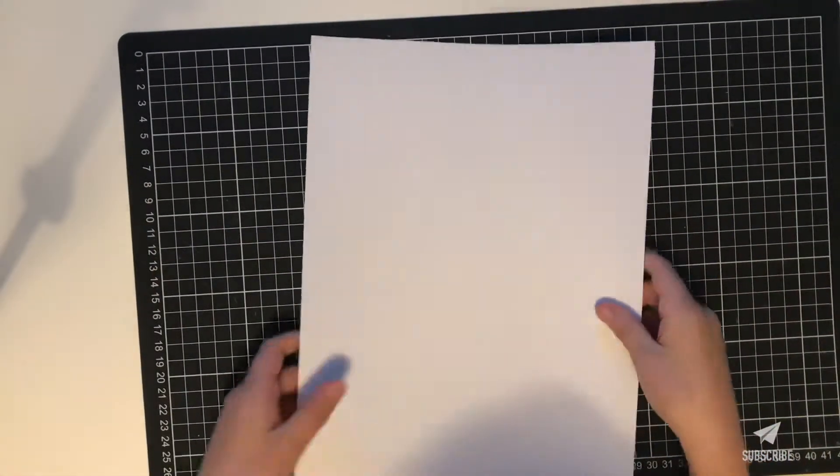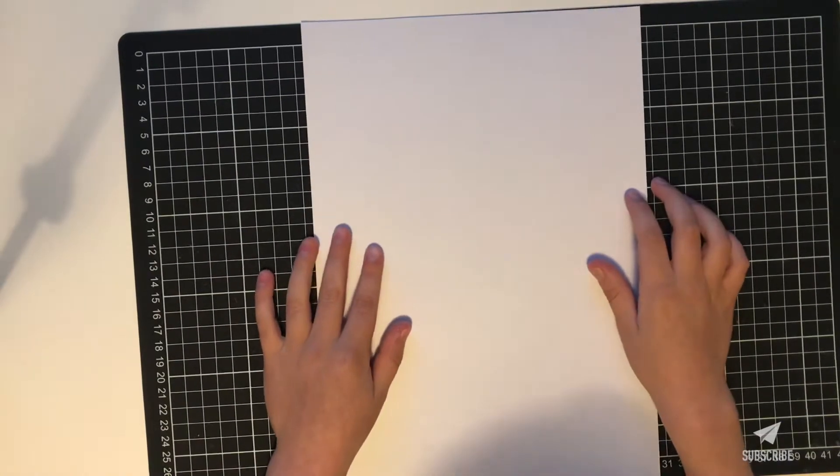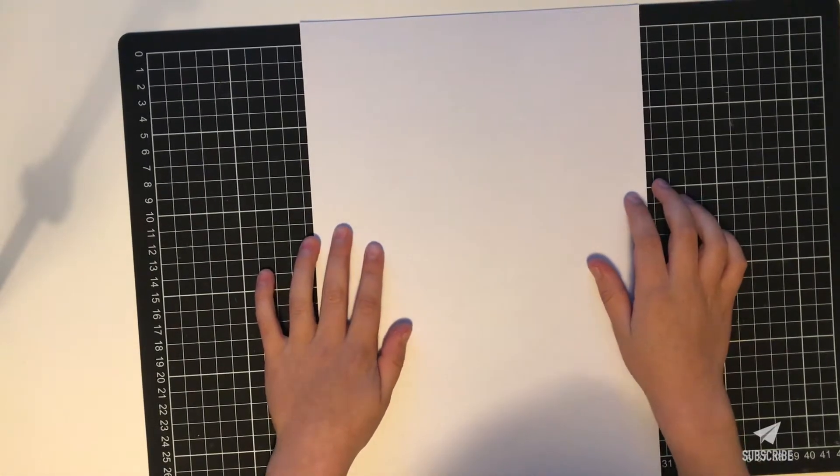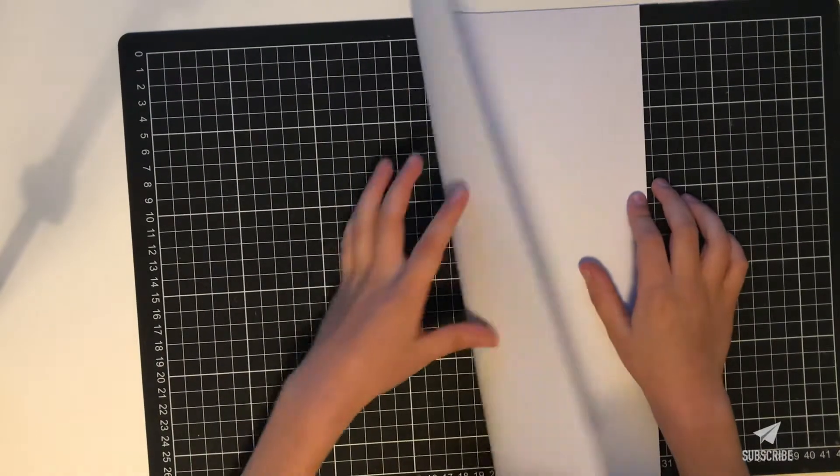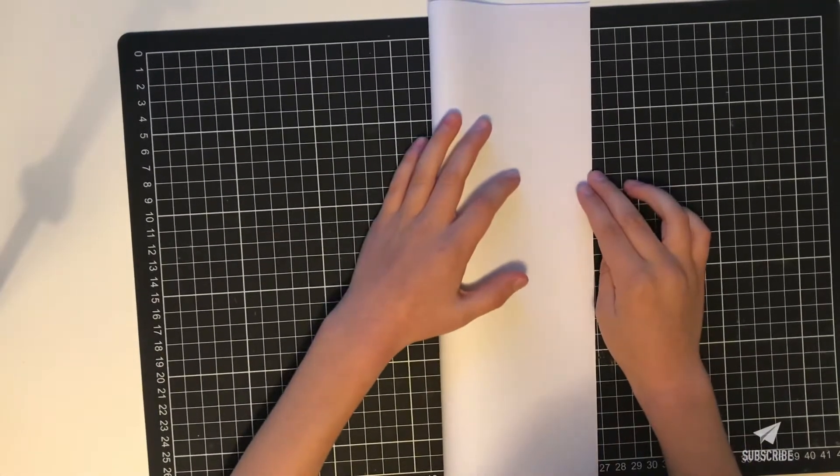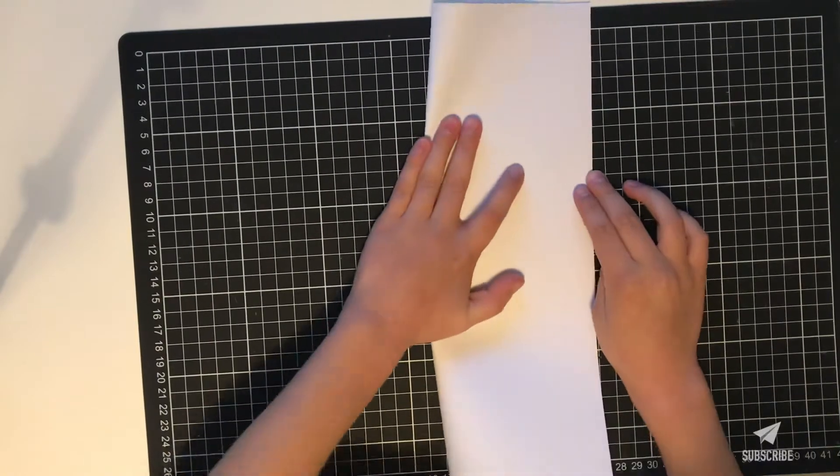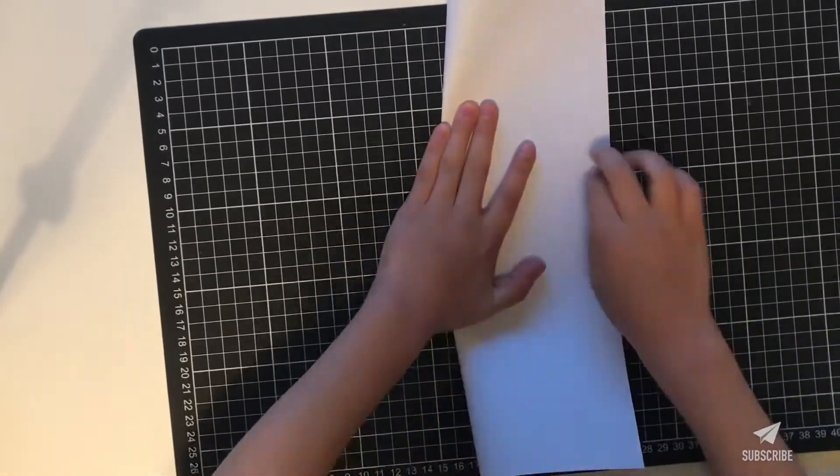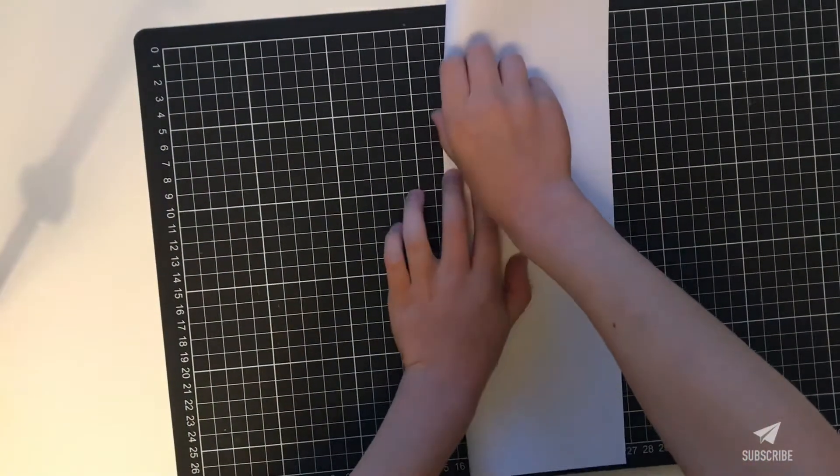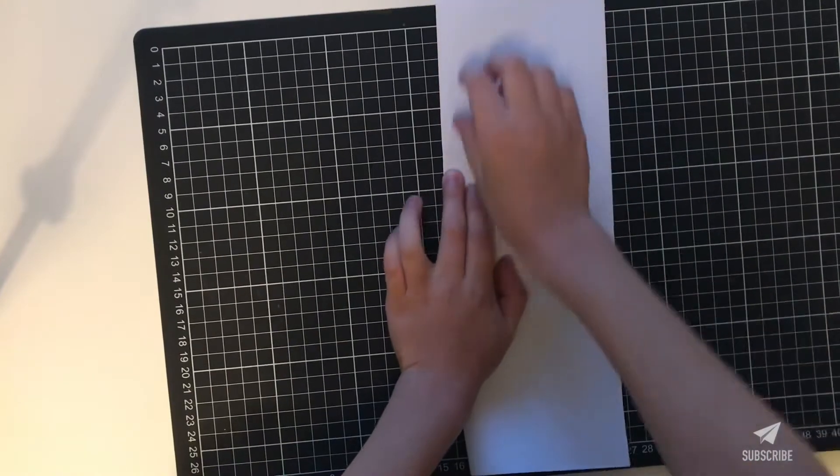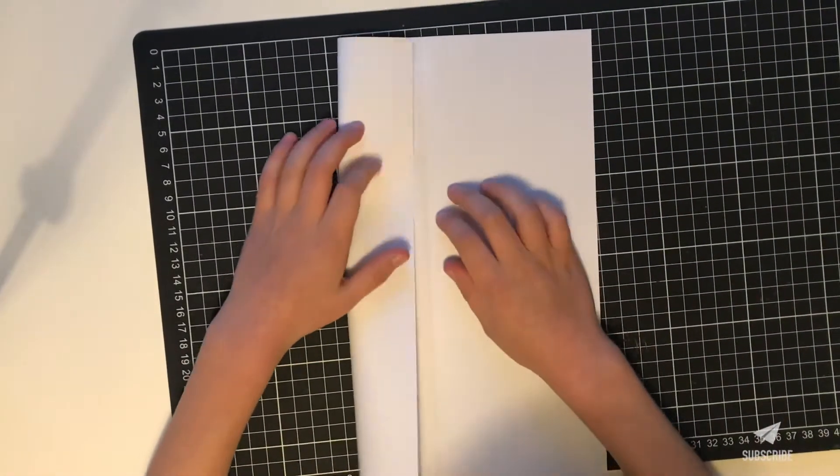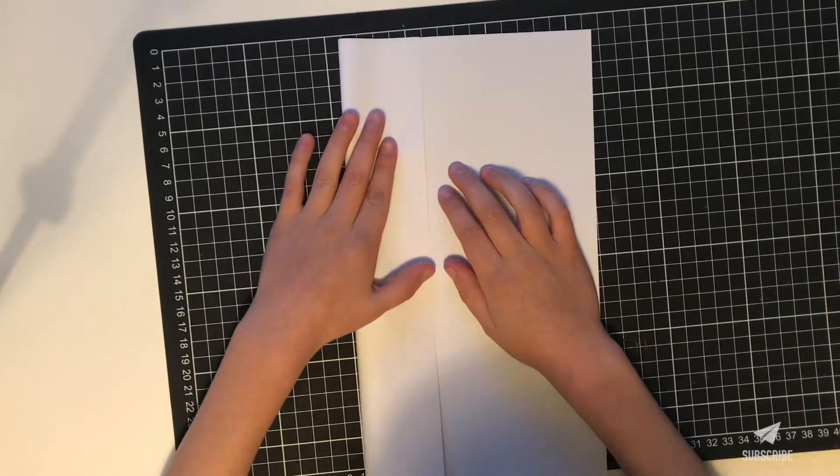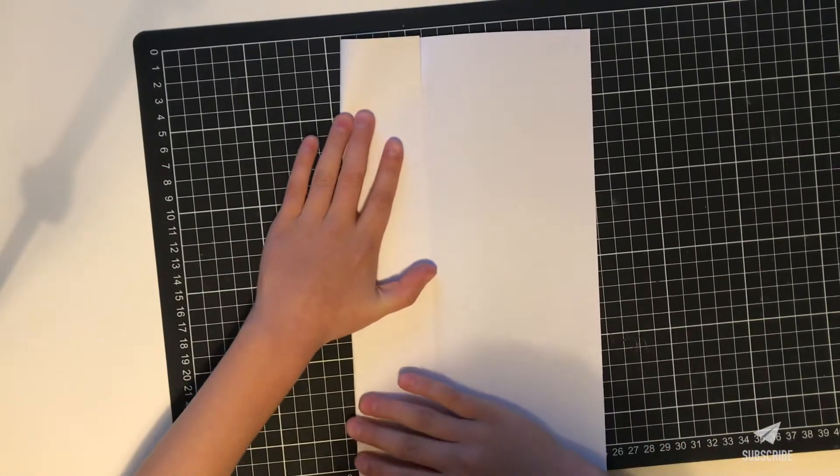All we'll need is a rectangular A4 piece of paper. Now we're going to fold it to the side. Then we're going to fold the sides to the middle crease we just made.